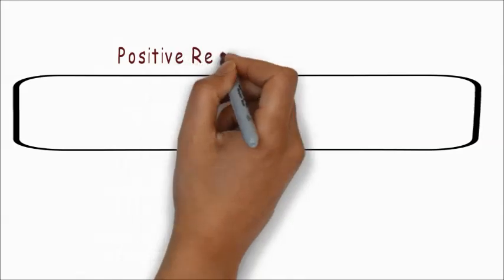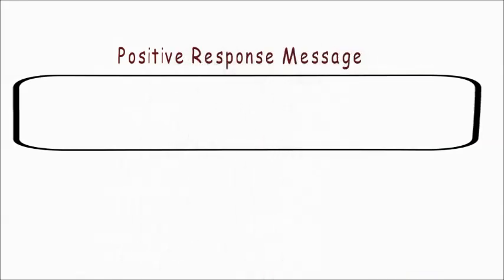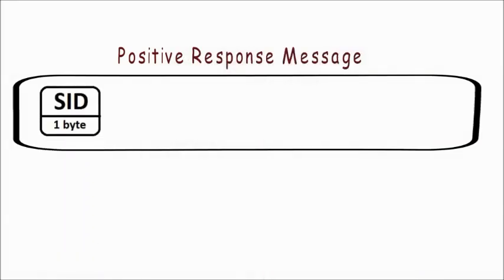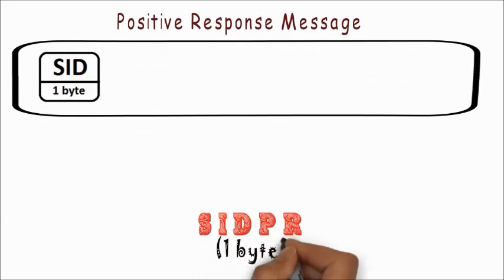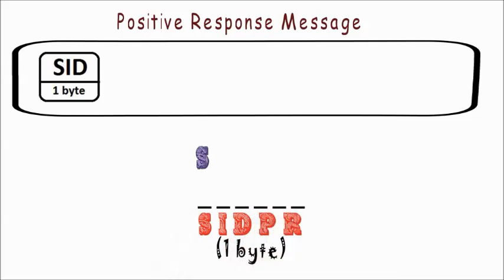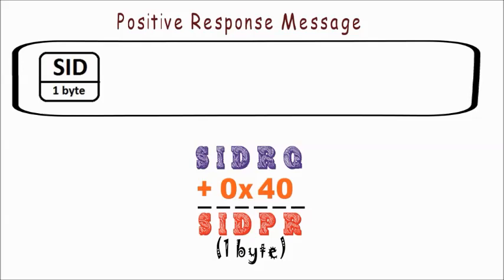The positive response message starts with a positive response service identifier. The positive response service identifier for a service is a one byte value, and is the same as the request service identifier with the addition of hexadecimal 40 to it.